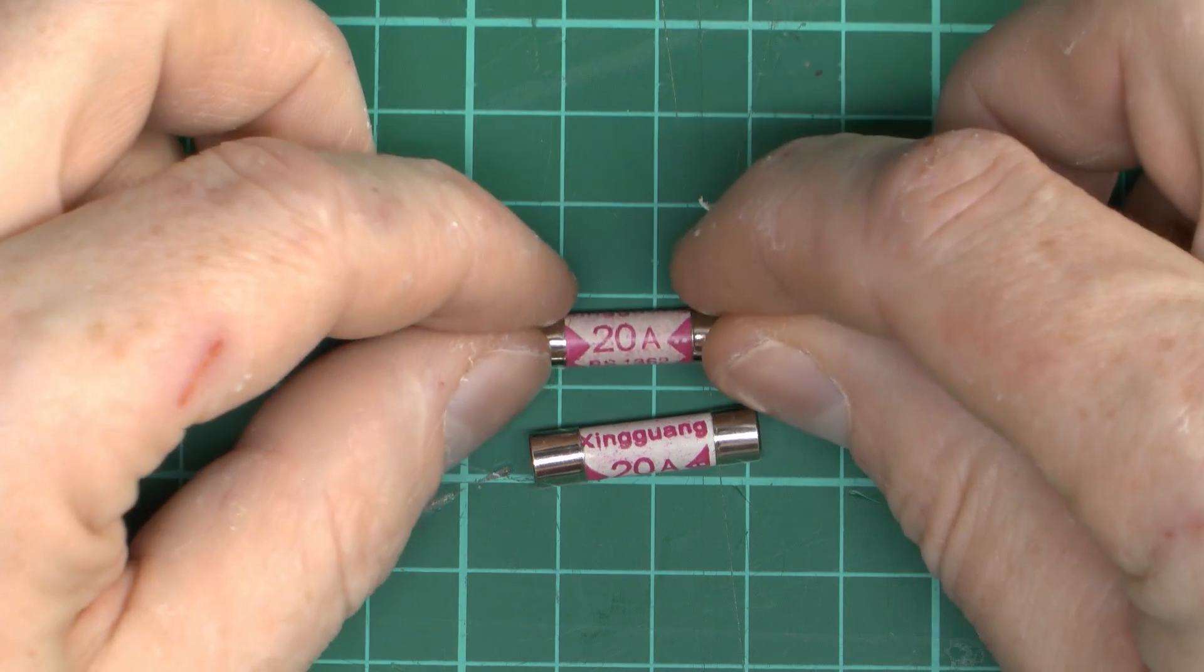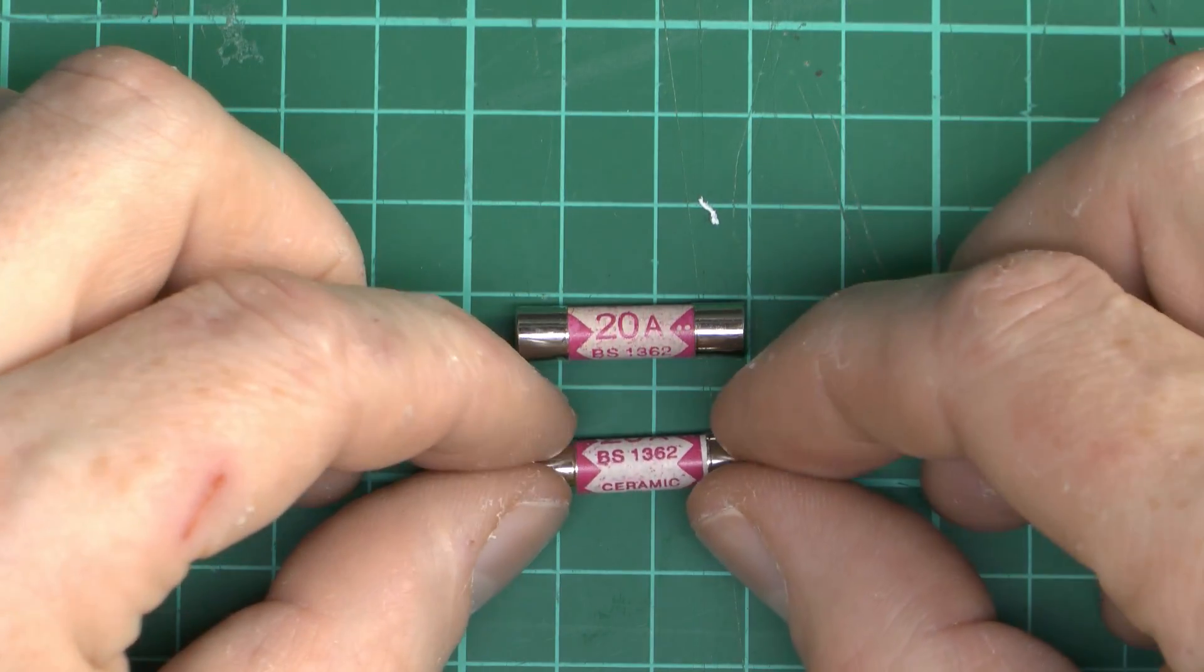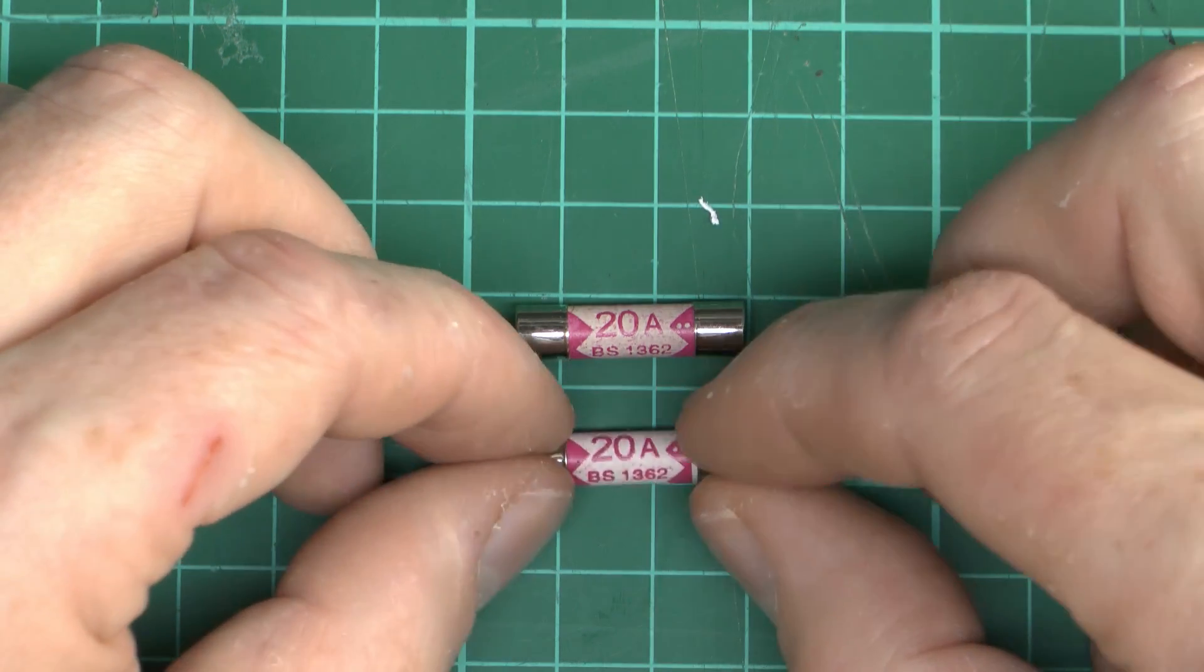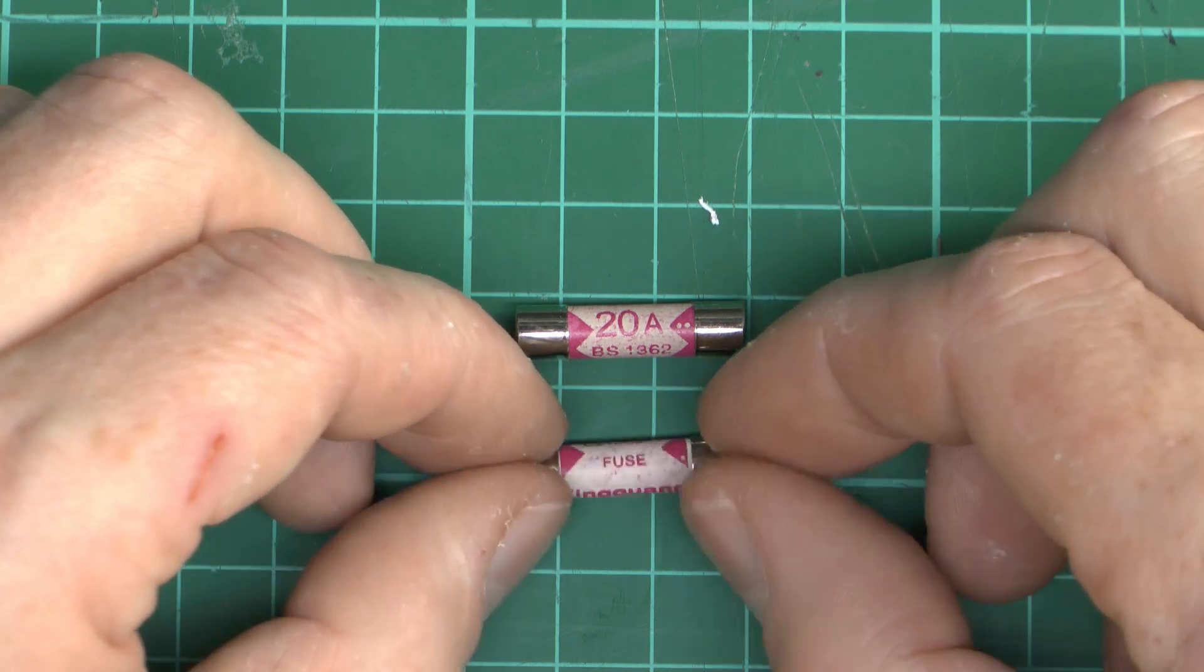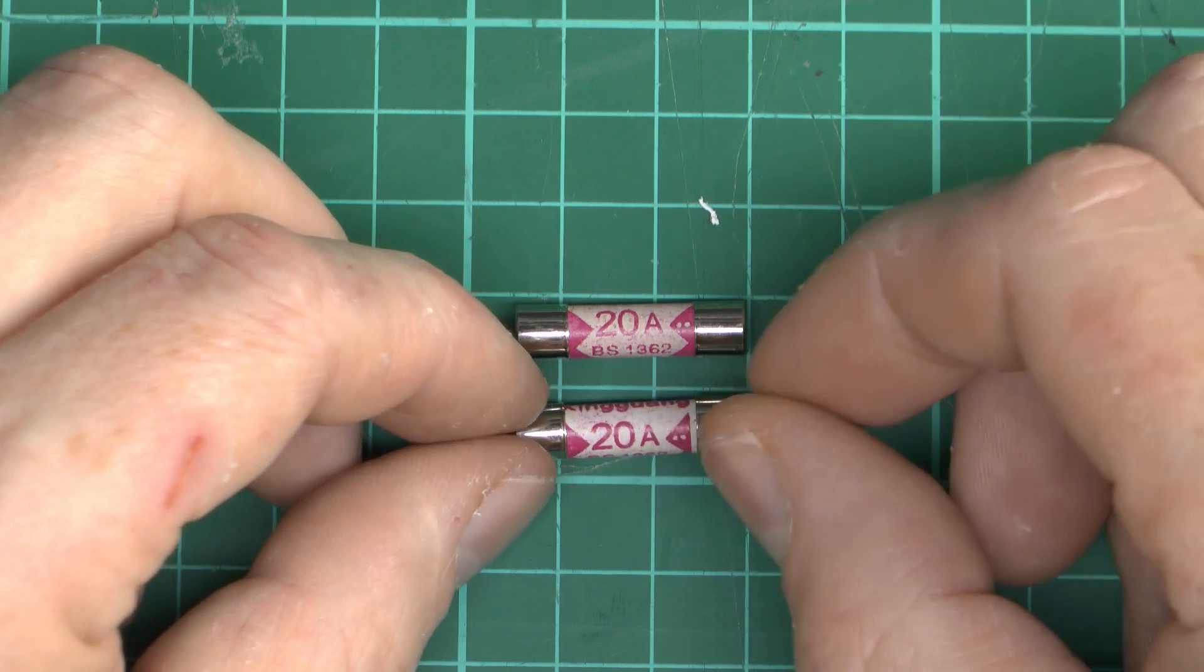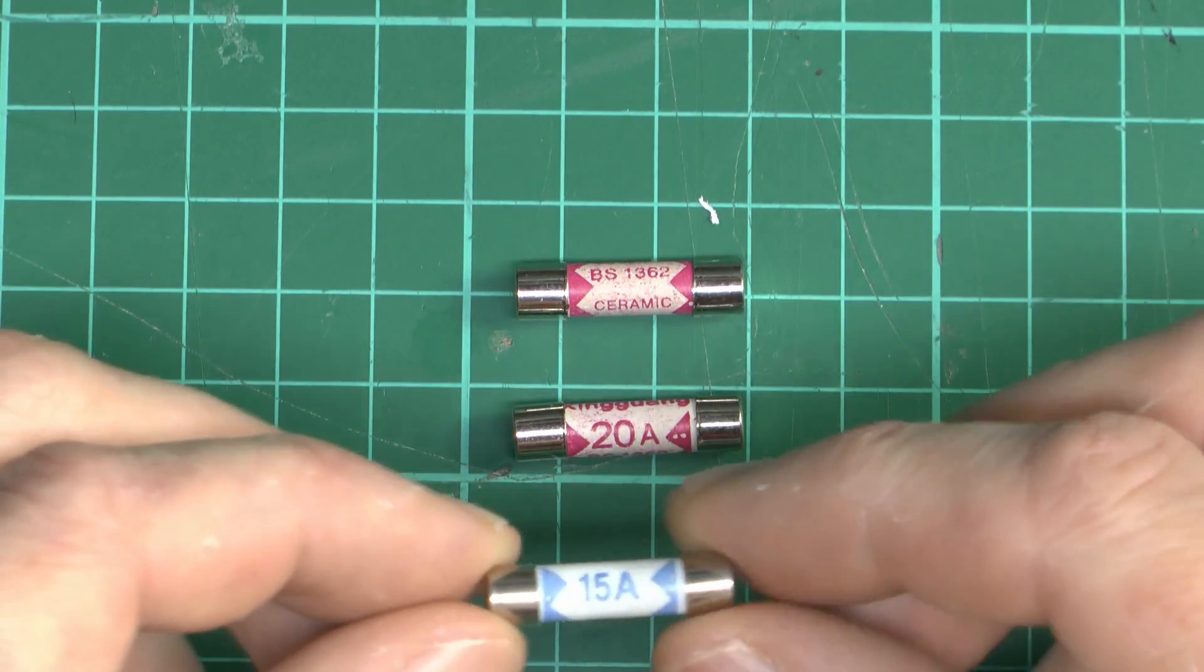So look at these 20 amp jobs first of all then. King Guan apparently is the brand on those. BS362 which of course it isn't because there's no definition in that standard for a 20 amp fuse. Ceramic fuse, well it might be, but that's kind of what they should be made of anyway, so really stating the obvious.